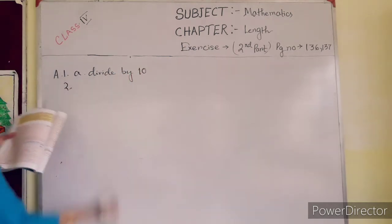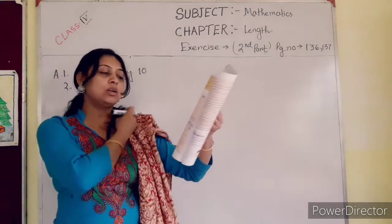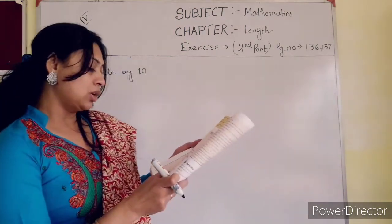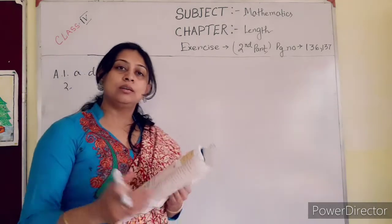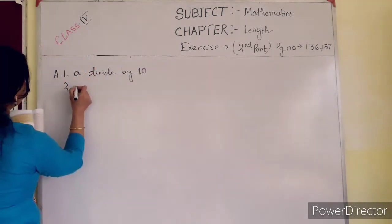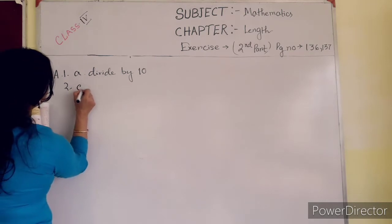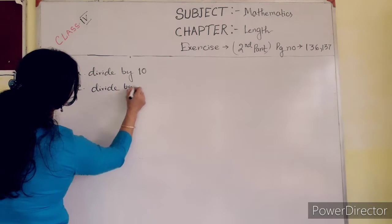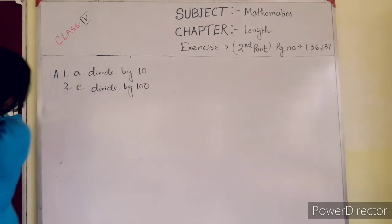Now 2. To convert centimeters to meters, we divide by 100. Option C is correct. Divide by 100.